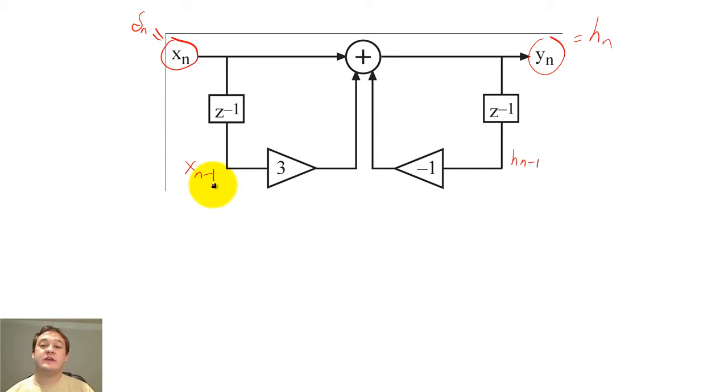We can describe h of n by adding up the different components that create the output. So h sub n would equal h sub n minus 1, times negative 1, plus the input, plus the delayed input scaled by 3.